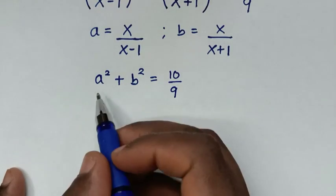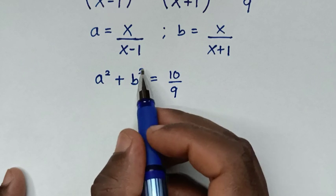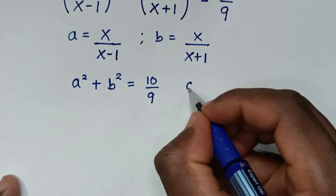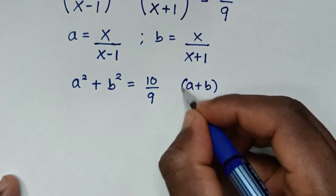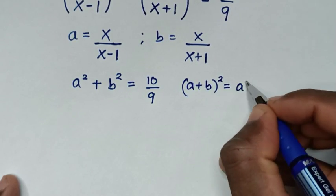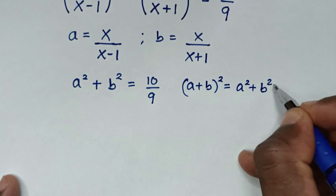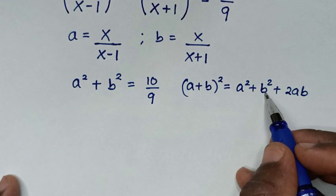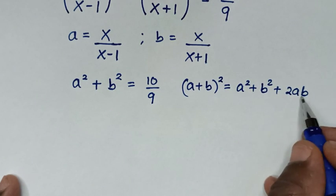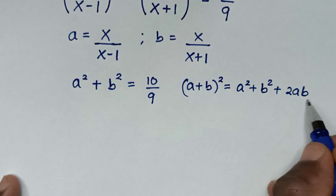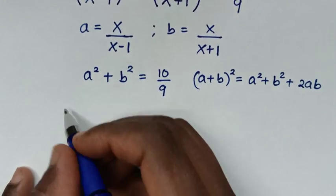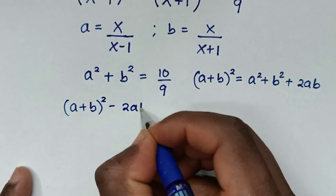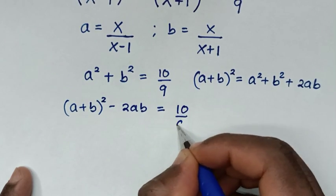In the next step, for a squared plus b squared, we apply the algebraic rule: (a plus b) squared is equal to a squared plus b squared plus 2ab. So a squared plus b squared equals (a plus b) squared minus 2ab. Therefore, (a plus b) squared minus 2ab is equal to 10 over 9.